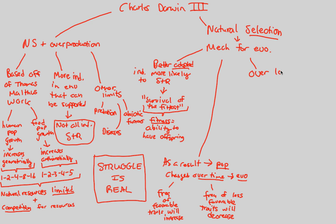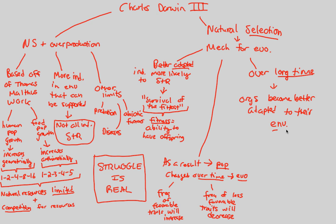One last thing people always fail to remember is that this happens over a long time. You cannot see this happen through one generation most of the time. After a long time, organisms become better adapted because of populations changing to the environment. This is literally the idea of life itself — getting better adapted to your environment through natural selection, and thus, over time, in the population, you will see evolution. That is Charles Darwin and his belief in a nutshell, and we'll continue our look at Darwinian evolution as we move forward in this series.